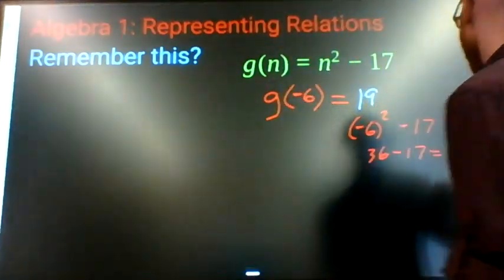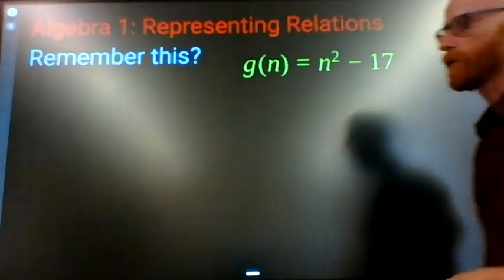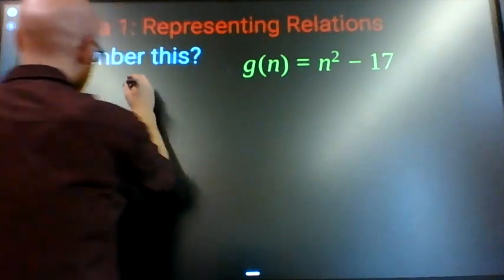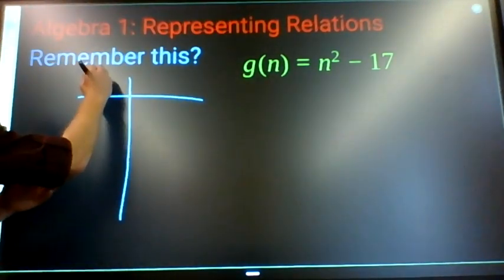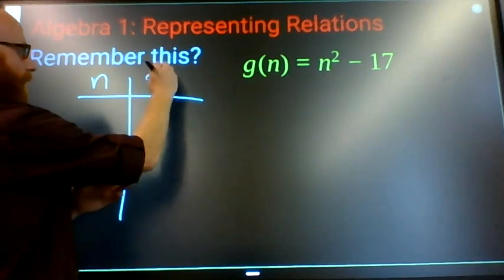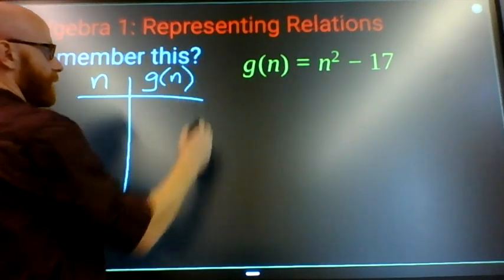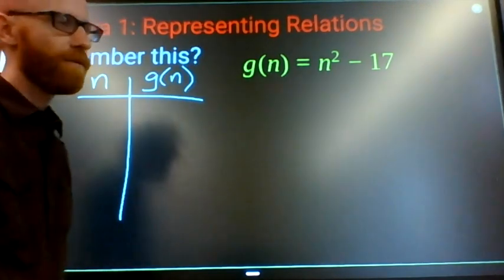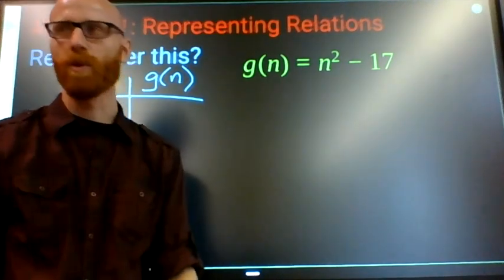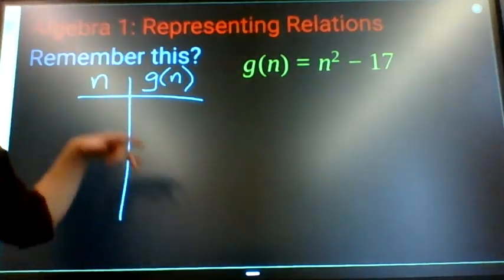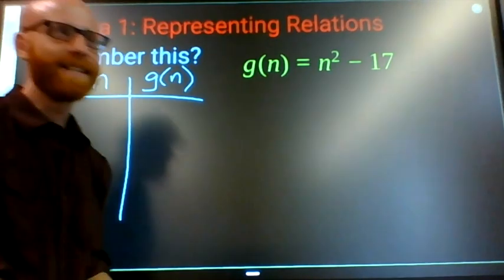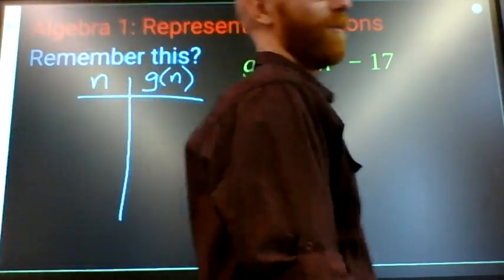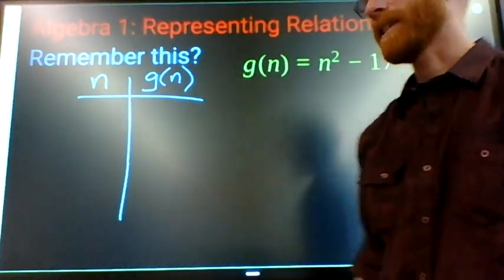Probably the simplest way to show a complete set would be to just make a table. Here's my n values, here's my g(n) values. If I ask you to make a table, I'm going to want you to choose your n values.